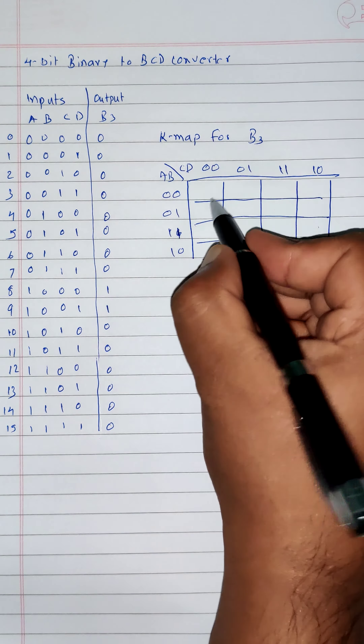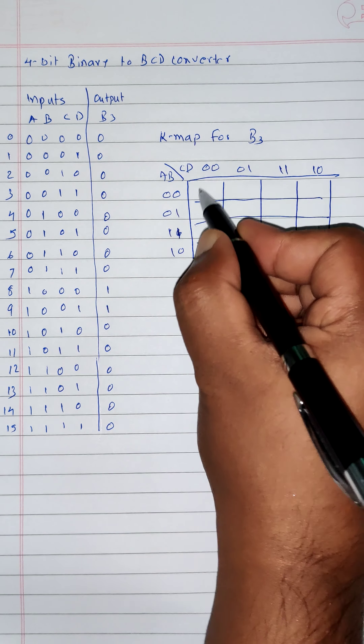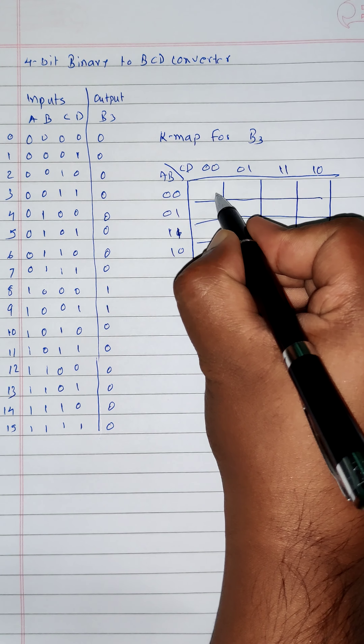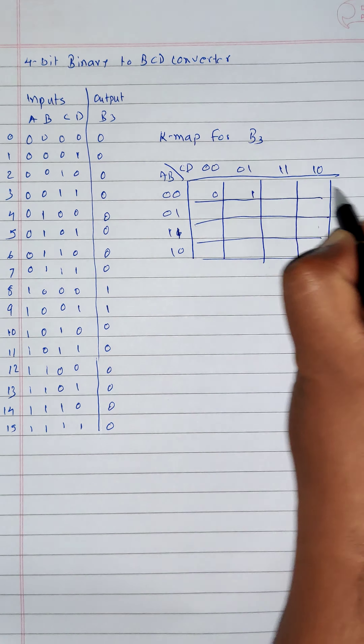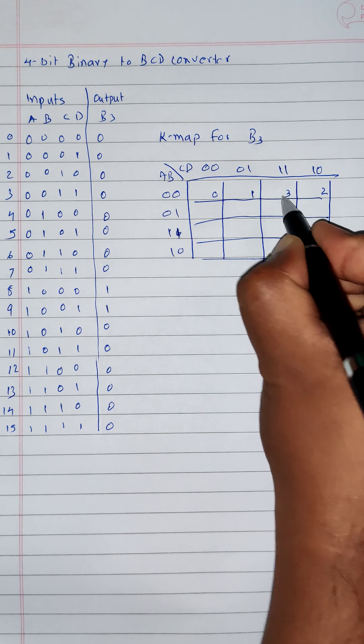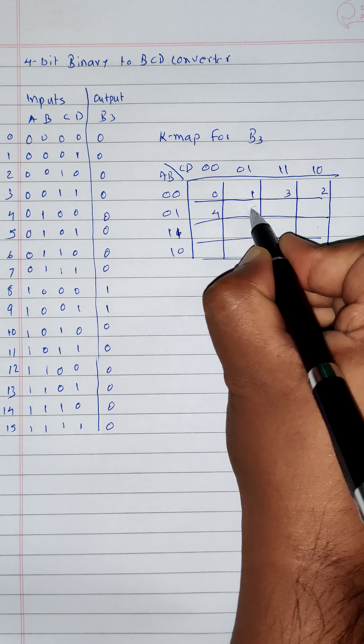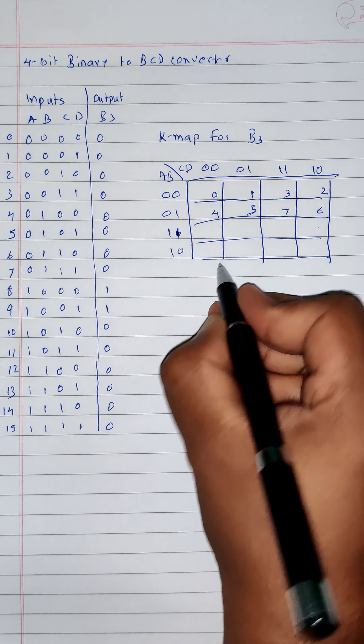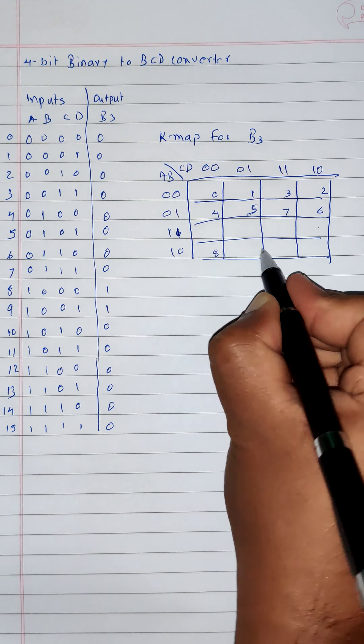Now let's write the values of these cells — these empty boxes are called cells. So the value of the cells are 0, 1, 2, 3, 4, 5, 6, 7, 8, 9, 10, 11, 12, 13, 14 and 15.